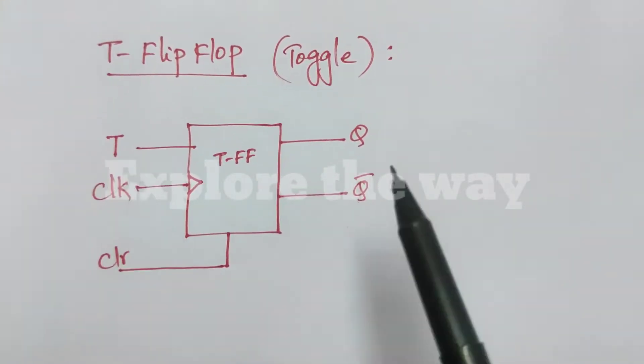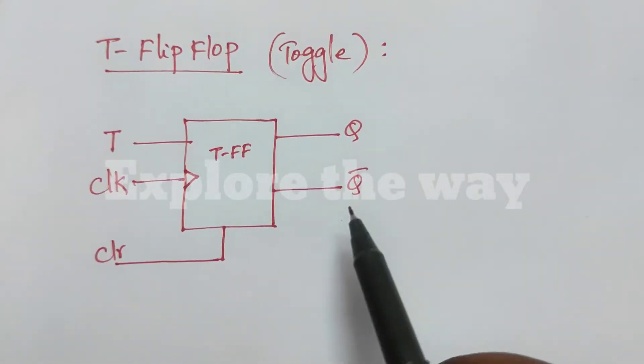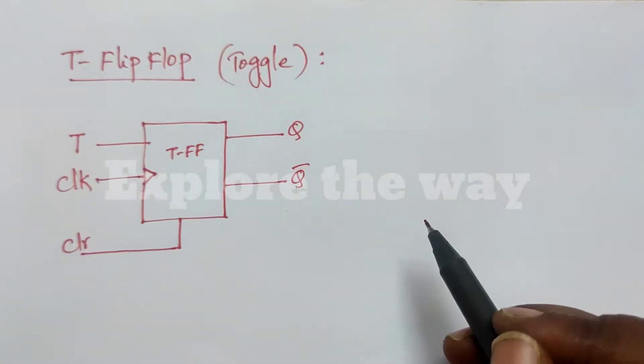If T is 1, the T flip-flop toggles. That means its output will be the complement of the previous state. Now we will summarize this behavior.